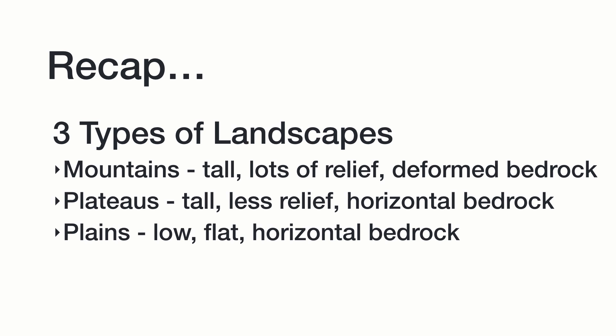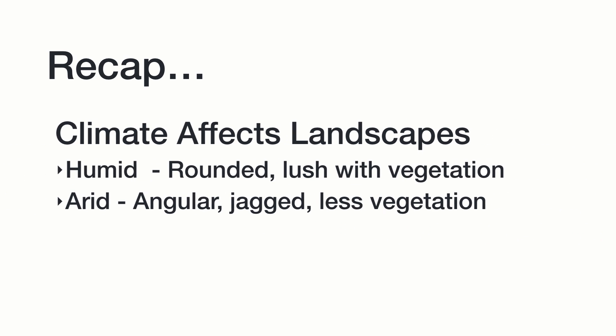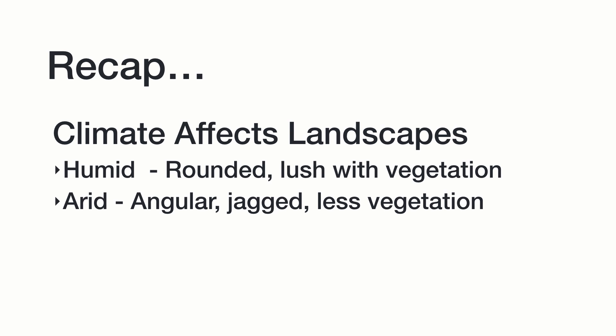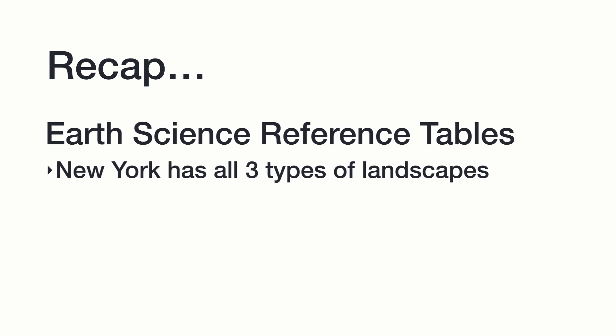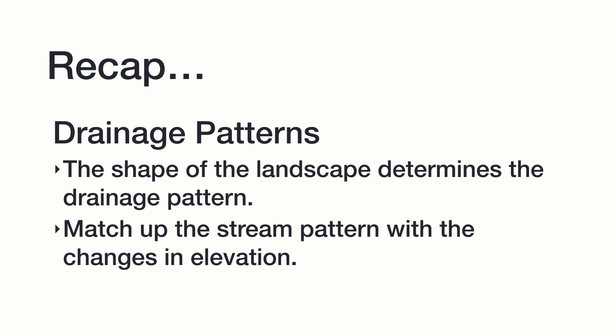Now for a quick recap. We talked about the three different types of landscapes, including mountains — which are tall with lots of relief resulting from deformed bedrock — plateaus, which are also tall but have less relief and flat horizontal bedrock, and plains, which are lower and flatter with horizontal bedrock. We discussed how local climate can affect landscape: humid landscapes will be rounded and lush with lots of vegetation, while arid landscapes will be angular and jagged with less soil and vegetation. Remember, you can find the New York State landscapes and bedrock characteristics in your earth science reference tables, and keep in mind that New York displays all three types of landscapes. Finally, just remember that the shape of a landscape determines what the drainage pattern will look like, and it's your job to match up the shape of the landscape with the pattern of streams that we would see.